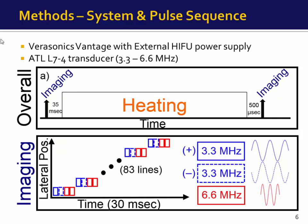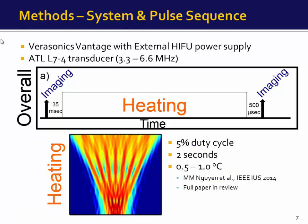The imaging sequence utilized 33 lateral lines; at each lateral line there were four transmit-receive pairs. The first pair utilized a 3.3 MHz transmit, the second pair a phase-inverted 3.3 MHz transmit, and the final two utilized in-phase 6.6 MHz transmits. Heating was done using a multi-foci lateral approach with the same L7-4 transducer.